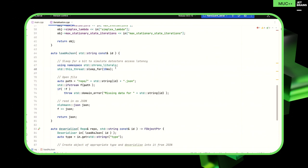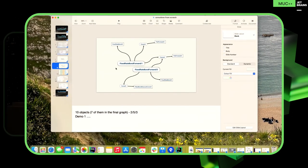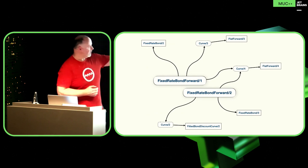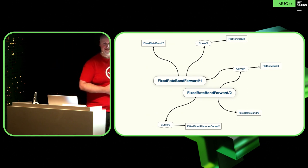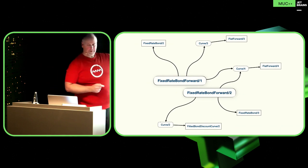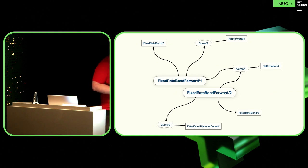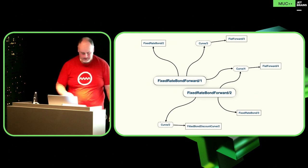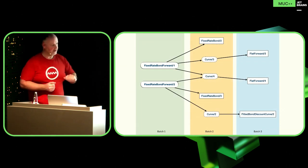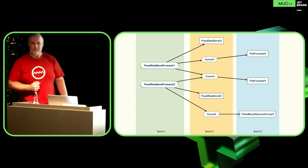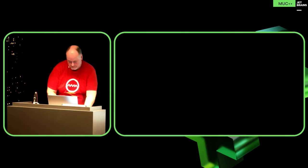Remember this is what we're trying to load — this whole object graph. We know straight away we want these two fixed-rate bond forwards, so we could ask the database for those two in one round trip. When we get that, if we ask each one what its dependencies are up front before trying to load them, we can get the next five dependencies in another batch, and then the last two in the last batch. So we end up with just three batches — three round trips to the database instead of ten.